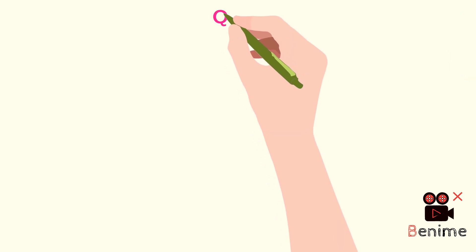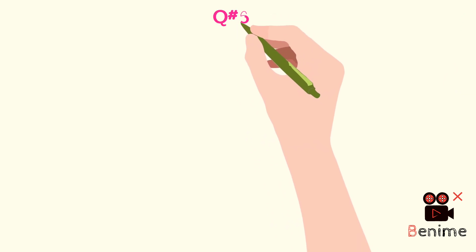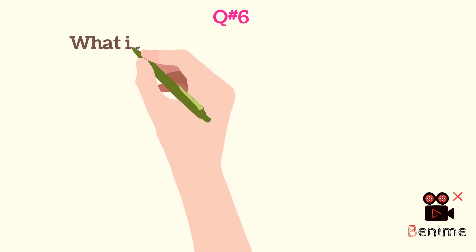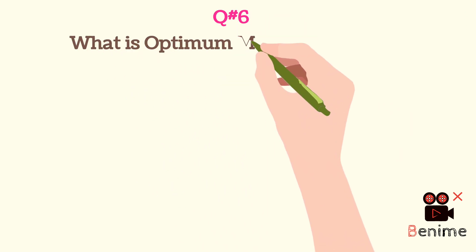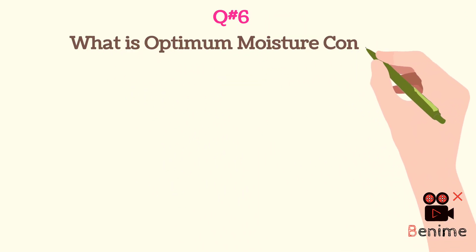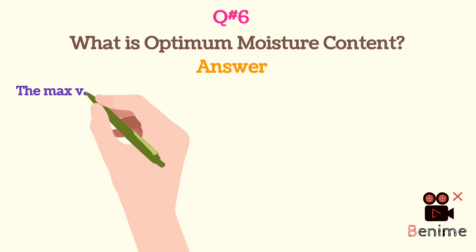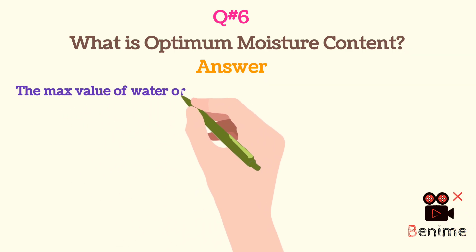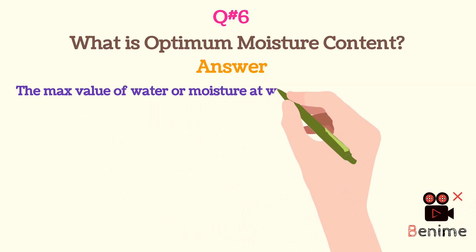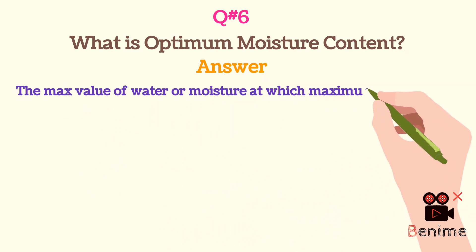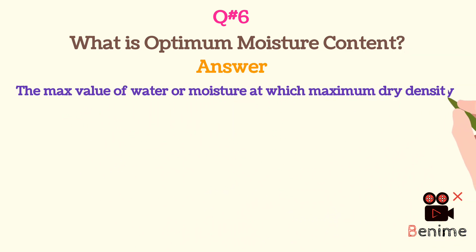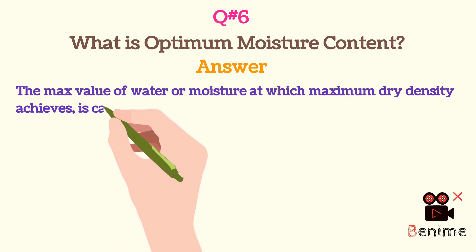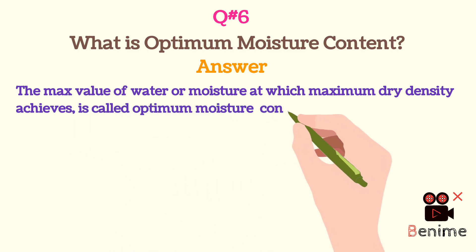Question 6: What is optimum moisture content? The maximum value of water or moisture at which maximum dry density is achieved is called optimum moisture content.